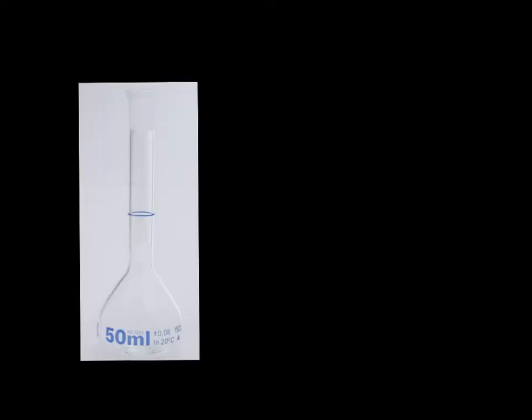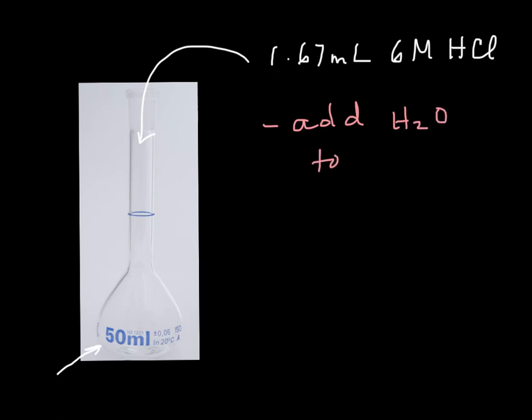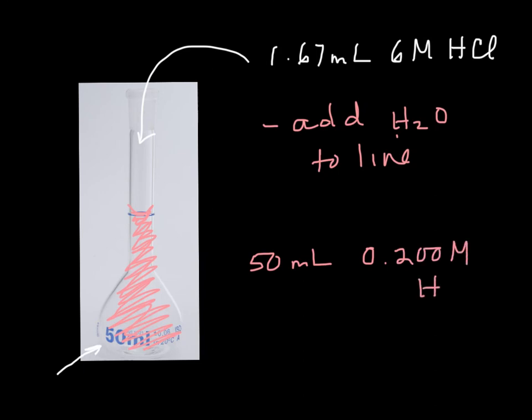I'm going to start, since I want 50 milliliters, I'm going to start with my 50 milliliter volumetric flask. And then into my flask, I'm going to put my 1.67 milliliters of 6 molar HCl. And then all I do is add water to the line. The same as we did last time. So I'm going to take water and I'm going to fill up this whole flask until the bottom of the meniscus just hits that line. Now I have exactly 50 milliliters of the 0.2 molar HCl that I wanted. And that's how you make a solution from a more concentrated solution, and we'll practice that some more together.